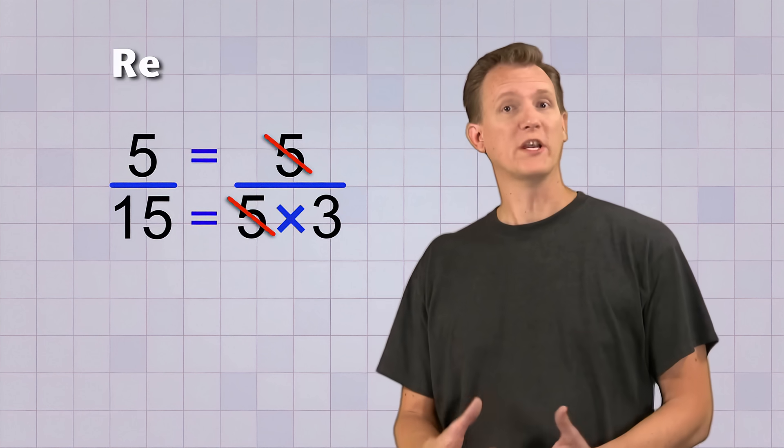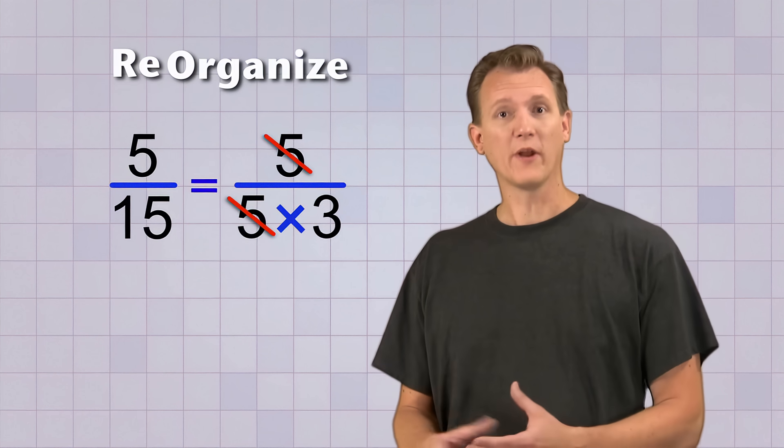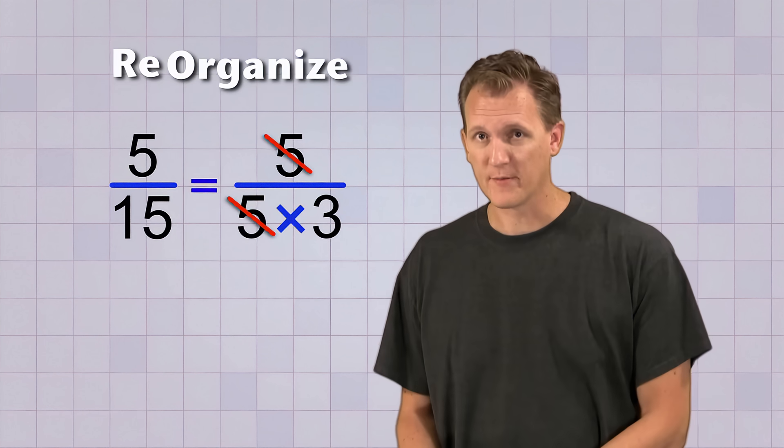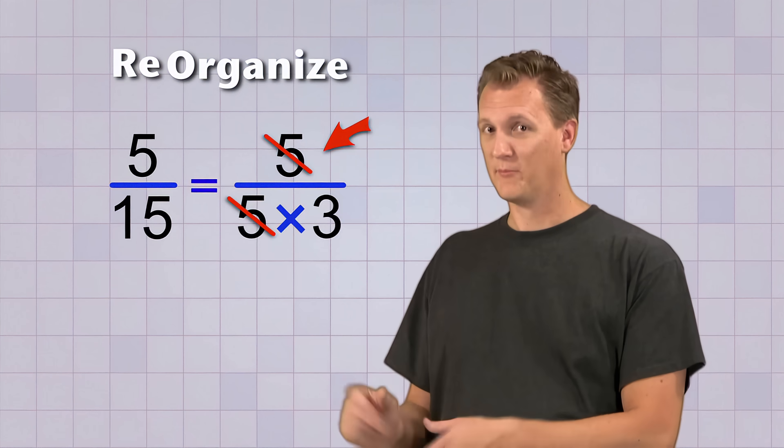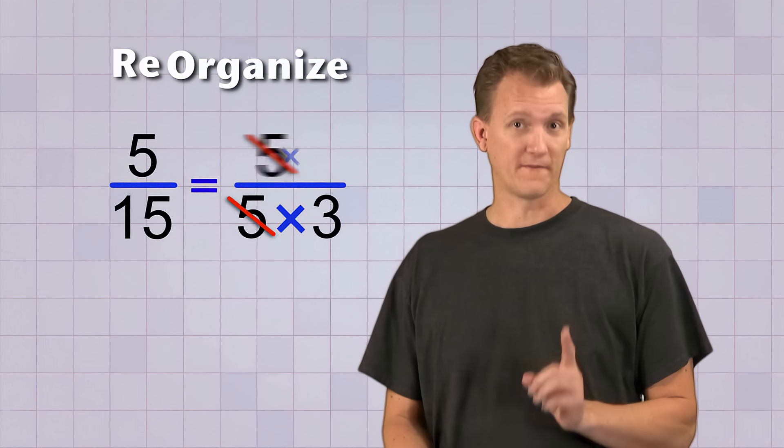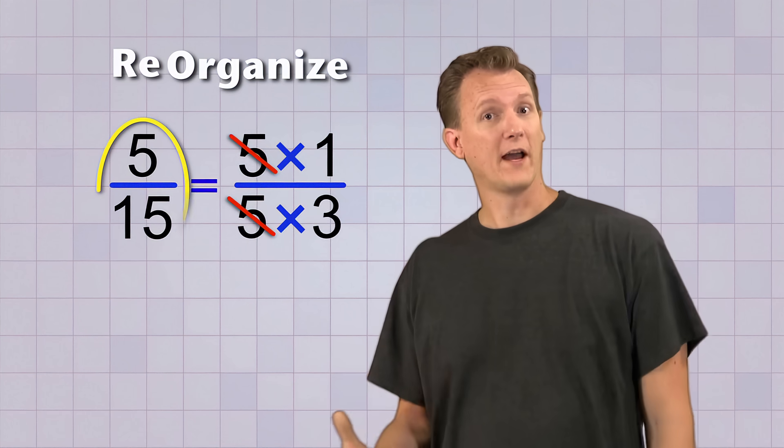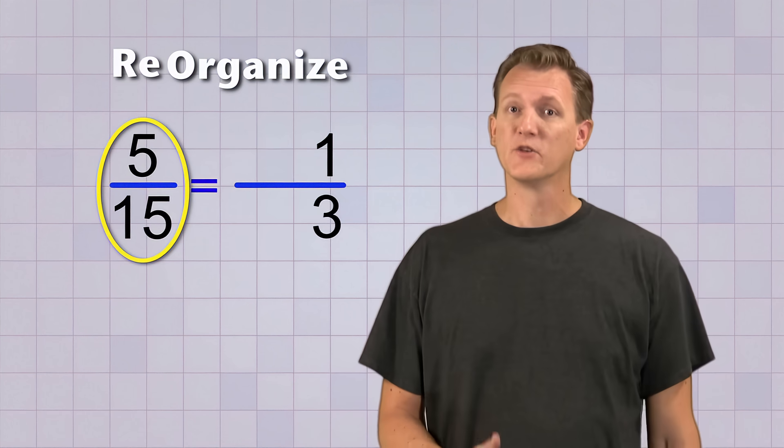They're not directly over each other, but that doesn't matter. They still form a common factor pair, and so we can cancel them out like this. Step three is to reorganize our answer. Now, we don't have any factors that need to be recombined by multiplying. We just have a 3 on the bottom, and we don't have any factors left over on top. But you'll remember that there's always a factor of 1. So 5 over 15 simplifies to 1 third.